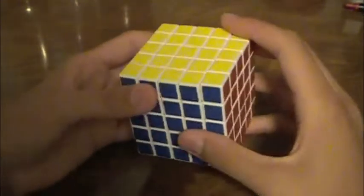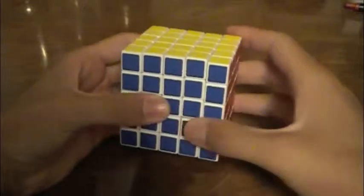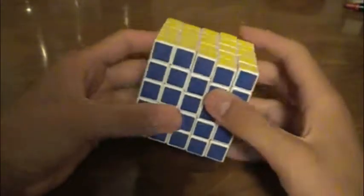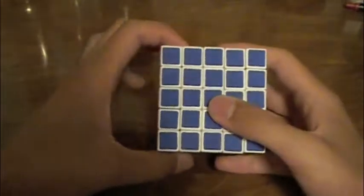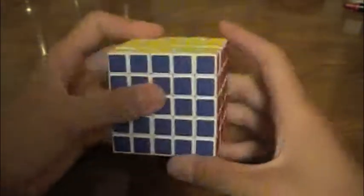When we expand to a bigger cube, like a 5x5, a little r instead refers to turning these two layers, which is similar, but not exactly the same. Therefore, little l2, lowercase f prime, and so on.